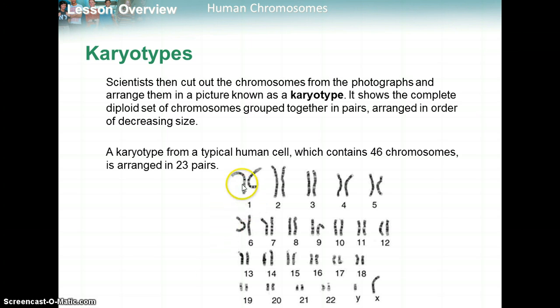For pair one, one comes from your mother and one comes from your father. A karyotype in a typical human would contain 46 chromosomes, or 23 pairs, which includes the sex chromosomes. This karyotype is a male. Karyotyping is often done via amniocentesis, where they take fluid from the amniotic fluid that has chromosomes from the baby to do genetic testing to see if there are any abnormalities.